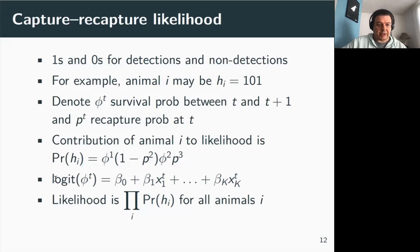In our study, we will write the time-dependent survival Phi_t as a linear function of the covariates, the X here, on the logit scale. And the general likelihood, the overall likelihood, is just the product of the probability of each capture-recapture history for all individuals.